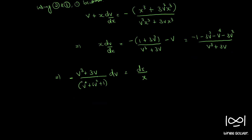Observing the derivative: if the denominator is v⁴ + 6v² + 1, its derivative is 4v³ + 12v. We can see that there is v³ + 3v in the numerator. So if we multiply both LHS and RHS by 4, we get 4v³ + 12v in the numerator, which is exactly the derivative of the denominator. So we can integrate it easily as a logarithm.